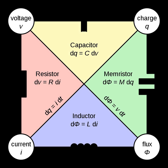Passive elements are elements which do not have a source of energy. Examples are diodes, resistances, capacitances, and inductances. Another distinction is between linear and nonlinear.